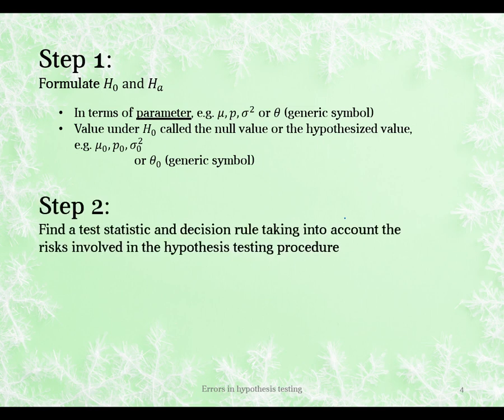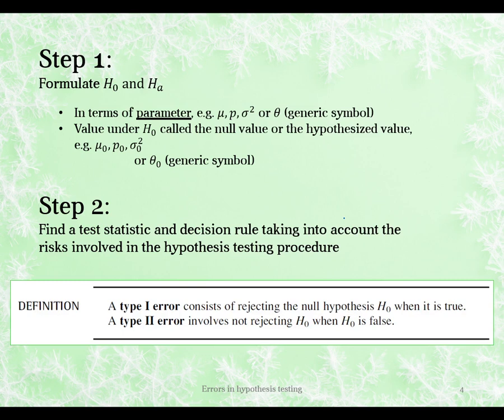Step 2 is finding a test statistic — deciding what is an appropriate test statistic to use, thinking about its distribution, and deciding on a decision rule, taking into account the risks involved in hypothesis testing. This is where the new work comes in. We will consider type 1 and type 2 errors, and we need to think about the distribution of the test statistic because that will tell us how big the risks associated with these errors are.